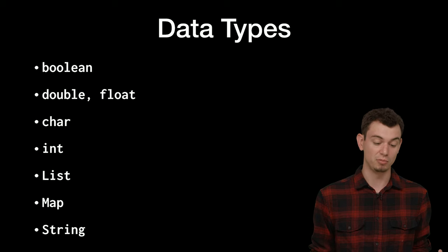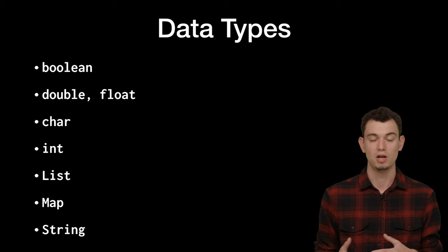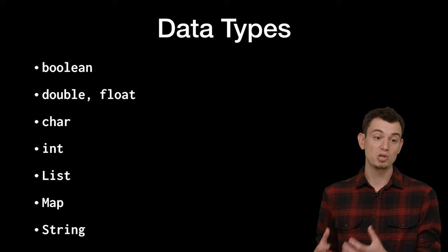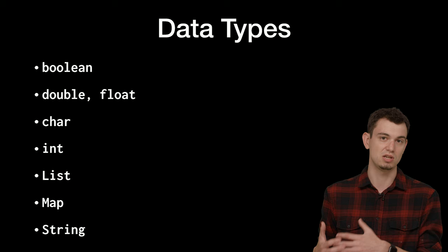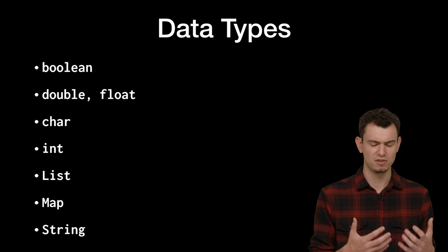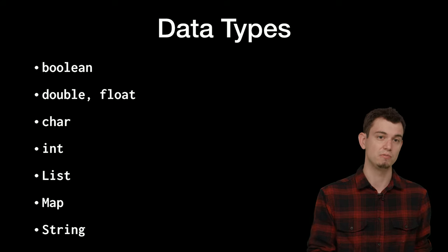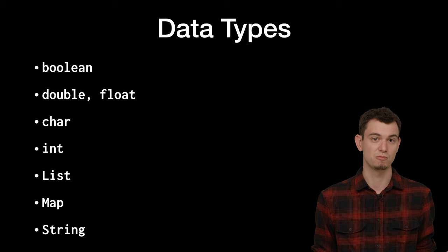Some of these probably look really familiar. Much like in C, Java has int, char, double, and float — all the stuff you're familiar with is supported in Java. Java also has more advanced data types like List and Map. The Java standard library — the set of objects, APIs, and libraries provided to you by using Java — is really, really large. We won't go through everything in these videos, but we'll touch on some classes you'll commonly use while writing apps.